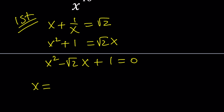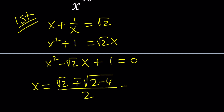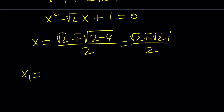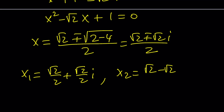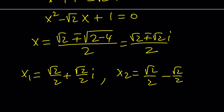There are going to be two solutions. They're going to be negative b plus or minus the square root of b squared — which is 2 — minus 4ac — which is 4 — divided by 2. That gives a negative discriminant, which can be written as square root of 2 times i, divided by 2. So one solution is root 2 over 2 plus root 2 over 2 times i, and the other solution is root 2 over 2 minus root 2 over 2 times i.